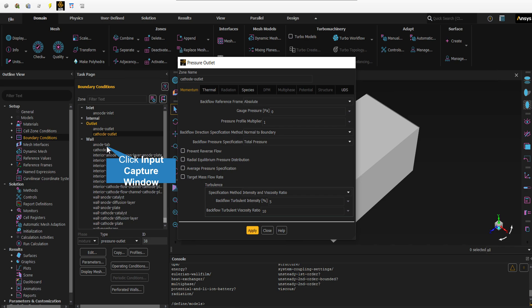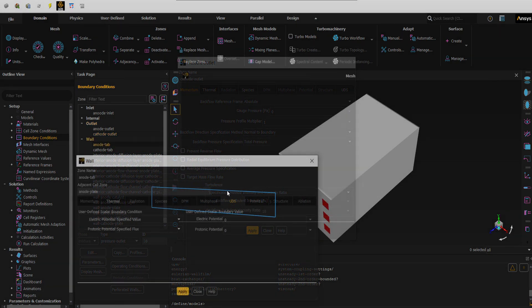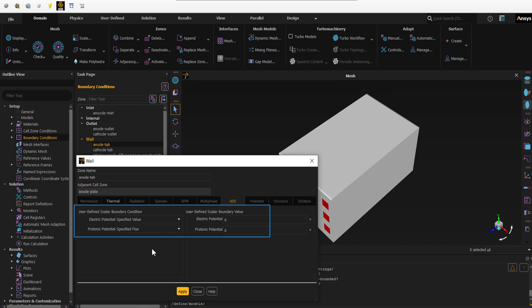First, we check the external walls corresponding to the electrolyzer terminals. So we select the anode terminal wall. We must define a specific boundary condition based on voltage or current density for the anode terminal. For this, we use the electric potential to define this boundary condition.